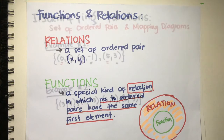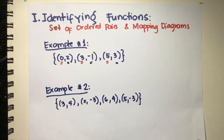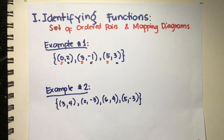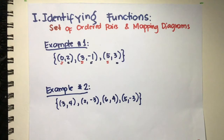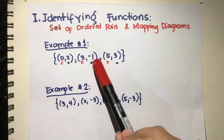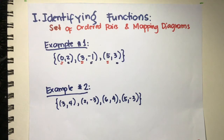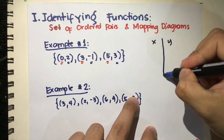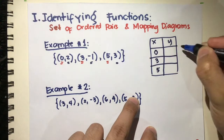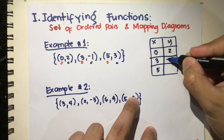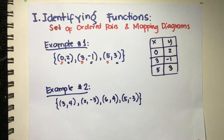Now let's identify functions using ordered pairs and mapping diagrams. In example number one, the first thing you're going to do is identify your x-coordinates and your y-coordinates. The x-coordinates are 0, 3, and 5, while the y-coordinates are 2, negative 1, and 3. Using a table of values, x is 0, 3, and 5, while y is 2, negative 1, and 3.